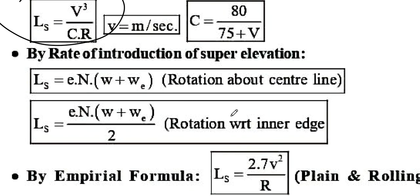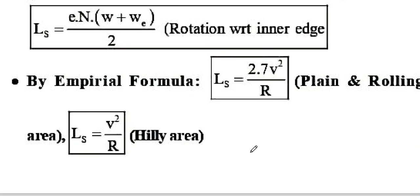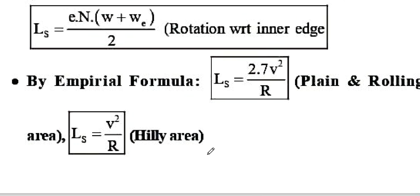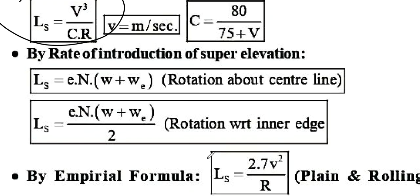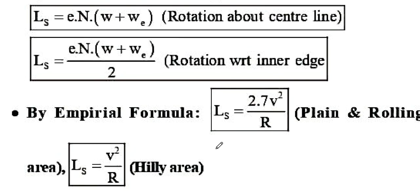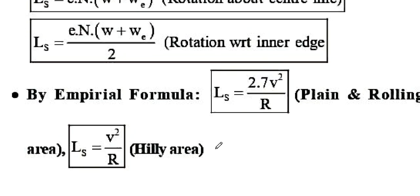For super elevation rotation about the center line, the formula for Ls uses E×N×(W + We). For rotation with respect to the inner edge, it is E×N×(W + We)/2. The empirical formula for transition curve length on plain and ruling terrain is Ls = 2.7V²/R.